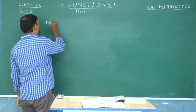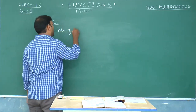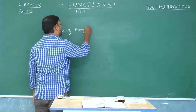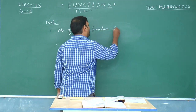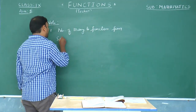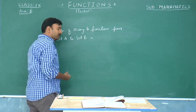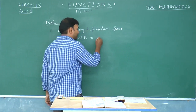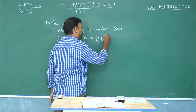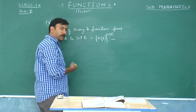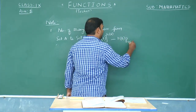The number of many-to-one functions from set A to set B equals the total number of functions, which is n(B) to the power of n(A), minus the number of one-to-one functions, which is n(B) P n(A).